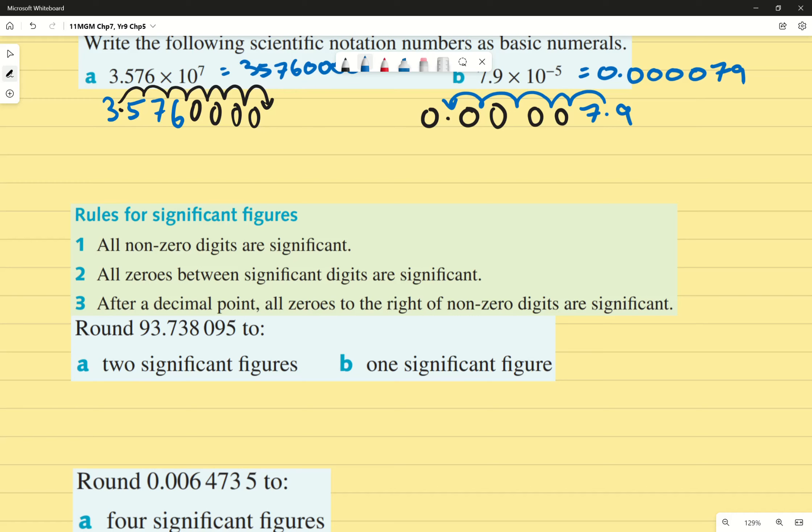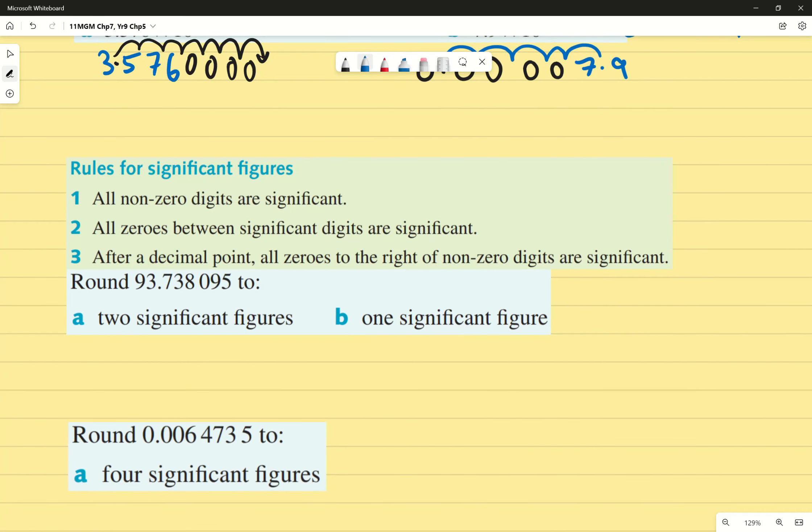For significant figures, it is kind of similar to rounding decimals, with the own difference being that we're not focusing on the decimals, but rather on the number of important digits. I'm going to specify important digits, because not all digits are important. And we can determine whether a digit is important by whether, if we remove that digit, it changes our answer. All non-zero digits are significant. All zeros between significant digits are also significant. And what I mean by that is that if a zero is in between two important numbers, it is also considered important by proximity. After a decimal point, all zeros to the right of non-zero digits are significant. We'll go through examples, and it'll make more sense when we go through those examples.